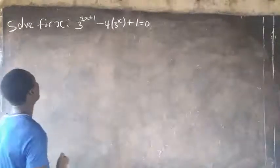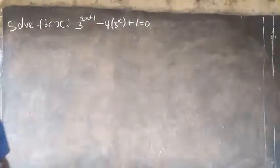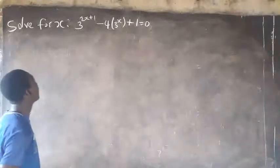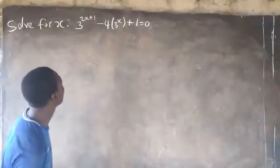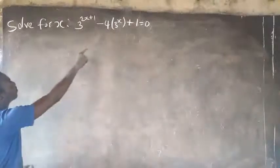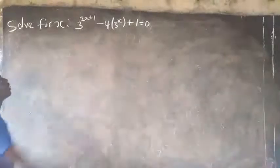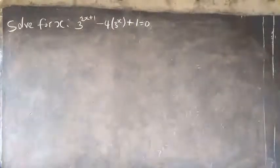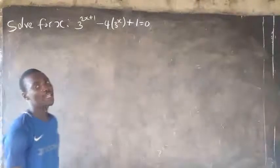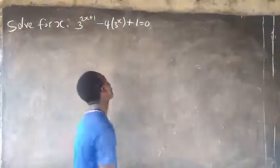In this video, we will be considering this question: solve for s in this equation — 3 to the power of 2s plus 1, minus 4 into 3 to the power of s plus 1, equals 0.